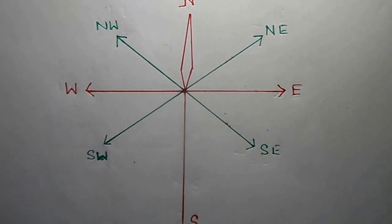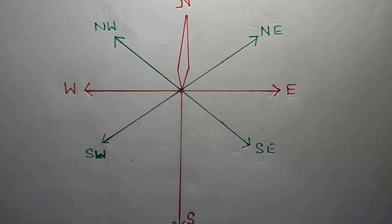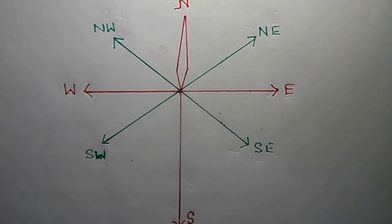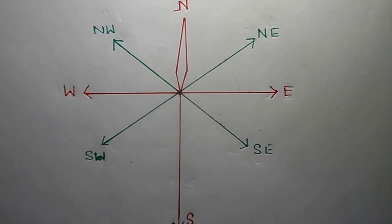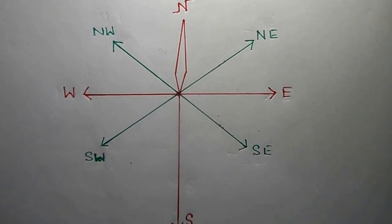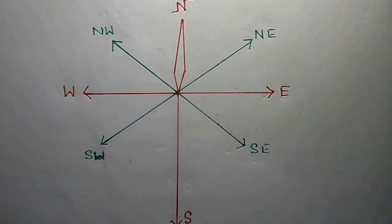Now directions. Direction is a very important component of map study. If you are studying a topographical map, you need to determine the directions of some components with respect to other components. There are 8 cardinal points in directions: north, east, west, south, northwest, northeast, southwest and southeast. With an example on the topographical map, I will show you how this is important.